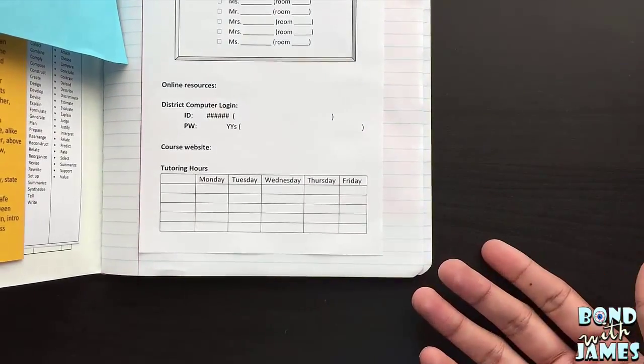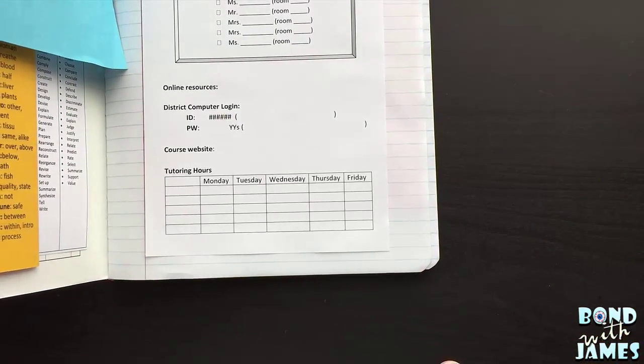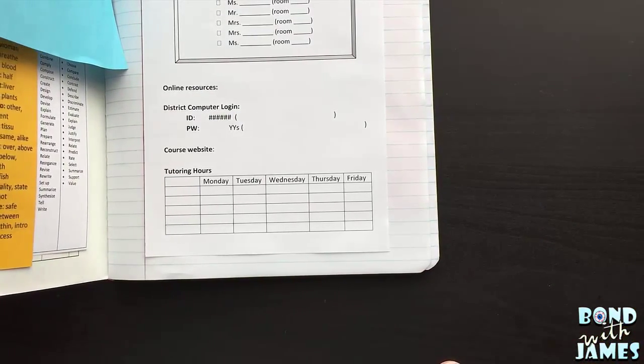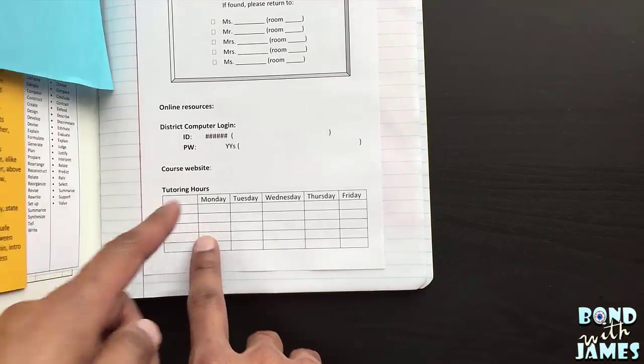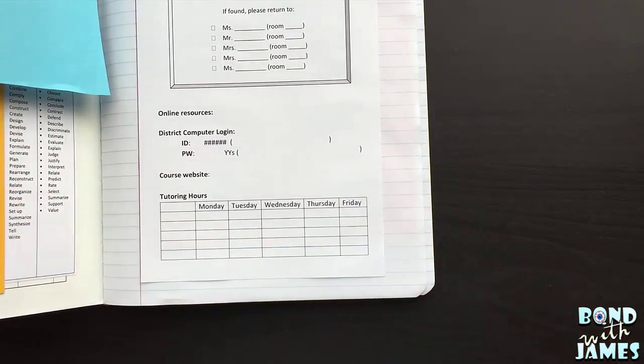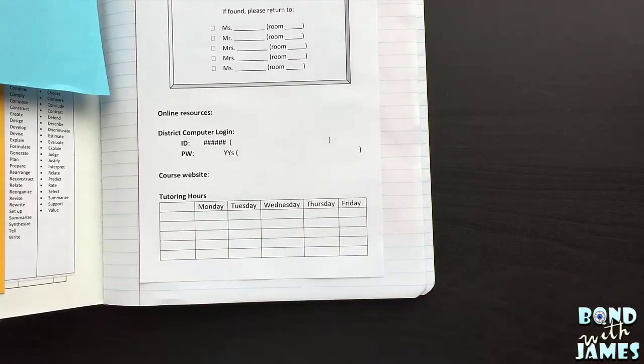We also share students. And so let's say, for example, I'm unavailable for tutoring on Monday after school. For some reason, then the students can go to whatever teacher has tutoring, whatever biology teacher that has tutoring on that time and receive assistance.